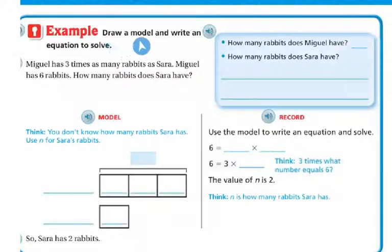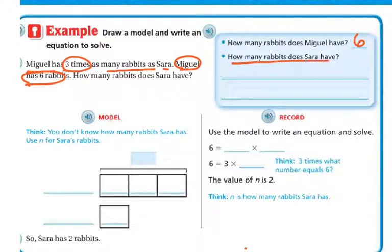Our next example, we're going to draw a model and write an equation to solve. So Miguel has 3 times as many rabbits as Sarah. Miguel has 6 rabbits. How many rabbits does Sarah have? So first of all, how many rabbits does Miguel have? So let's look back at the problem. Miguel has 3 times as many rabbits as Sarah. Miguel has 6 rabbits. So we know that Miguel has 6 rabbits. So how many rabbits does Miguel have? 6.